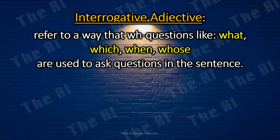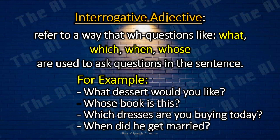Interrogative Adjectives. Interrogative adjectives refer to a way that wh-questions like what, which, when, whose are used to ask questions in a sentence. For example: What dessert would you like? Whose book is this? Which dresses are you buying today? When did he get married?